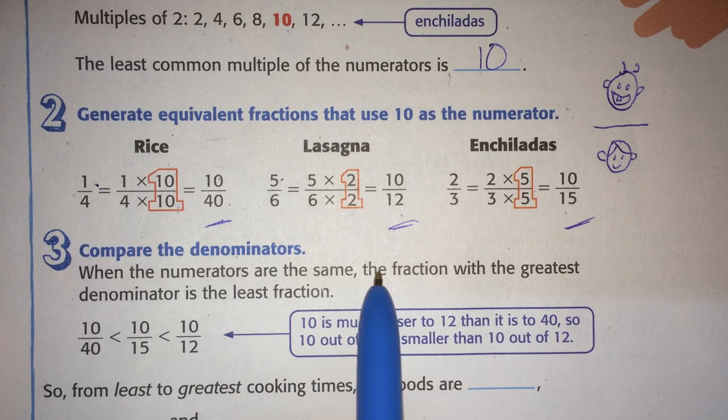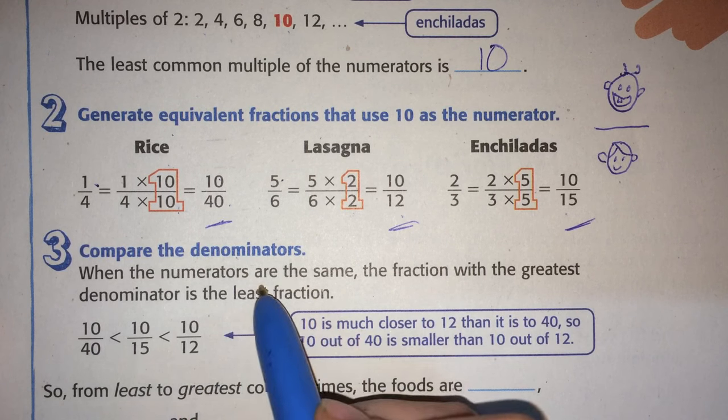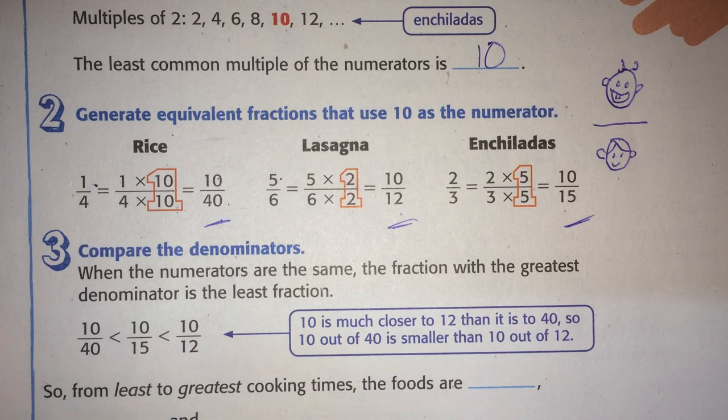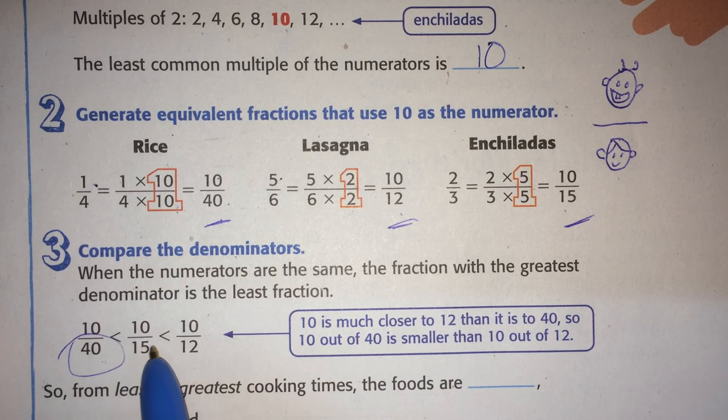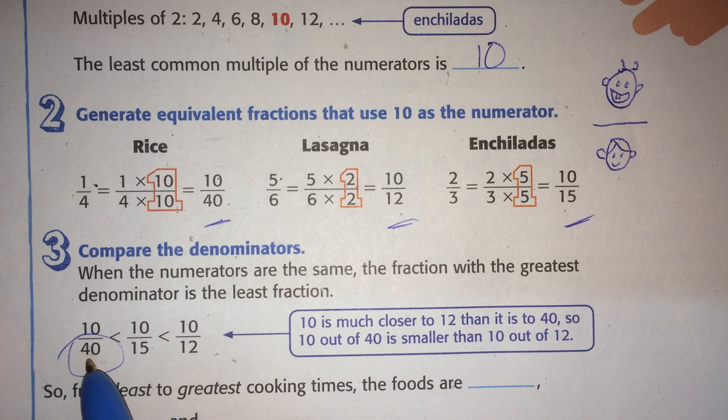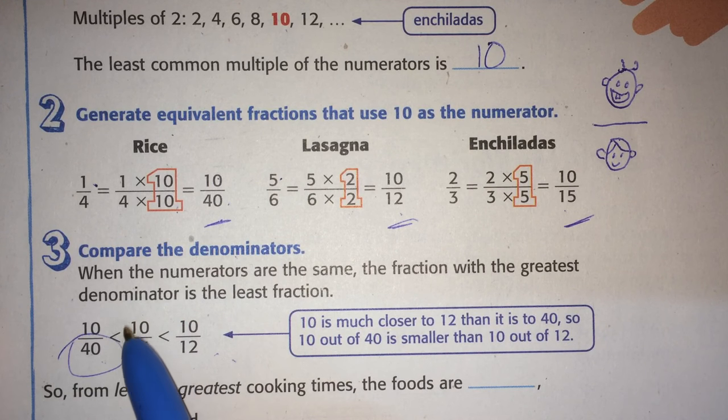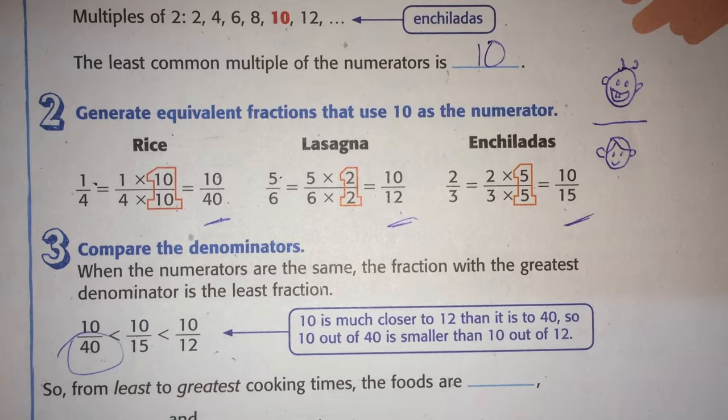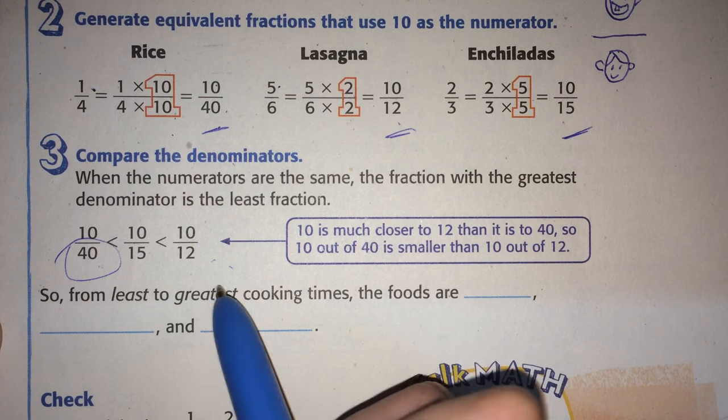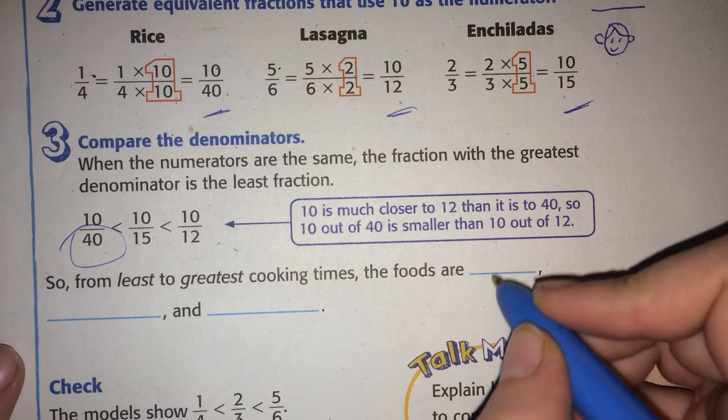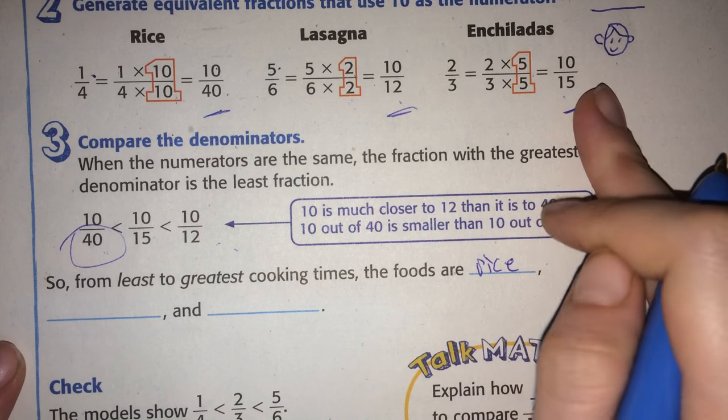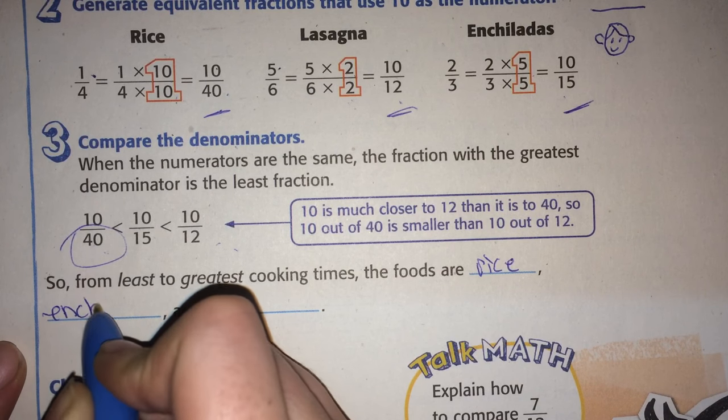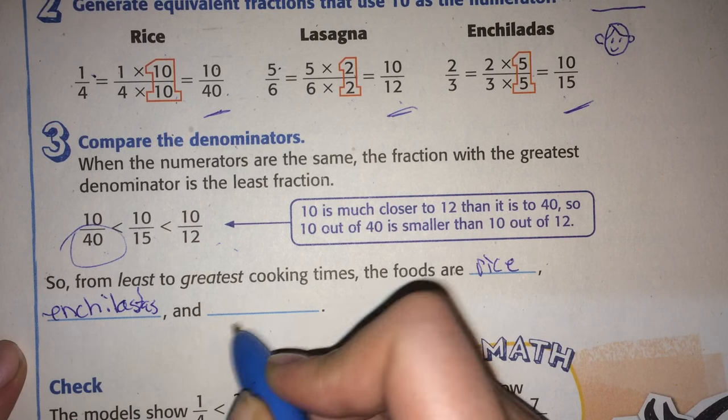When the numerators are the same, the fraction with the greatest denominator is the least fraction. So this one would be the least, because it has the biggest number on the bottom. Why? Because, imagine I cut a cake into forty pieces, and you got ten. That would be okay. But if I only cut the cake into fifteen pieces, getting ten is a lot. But if I cut the same cake into twelve pieces, getting ten pieces is almost all of it. So, from least to greatest cooking times, the foods are, which one was this? Rice. Then it was the enchiladas. And then it was the lasagna.